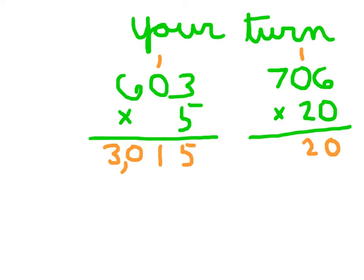2 times 0, which is 0, plus 1, which is 1. And then 2 times 7, which is 14. 14,120 is that product for 706 times 20.